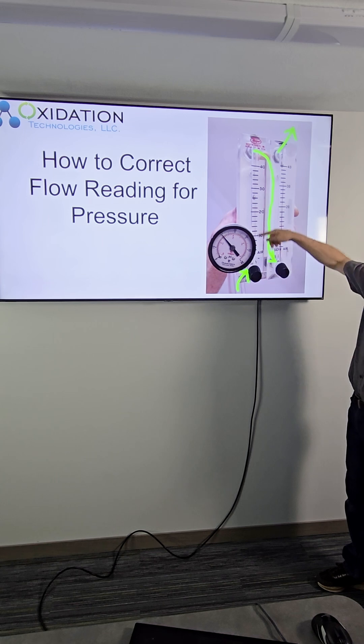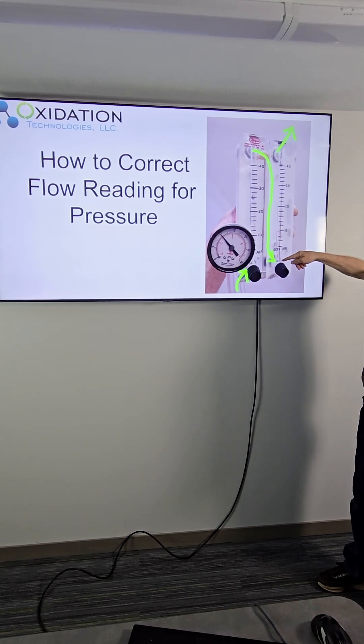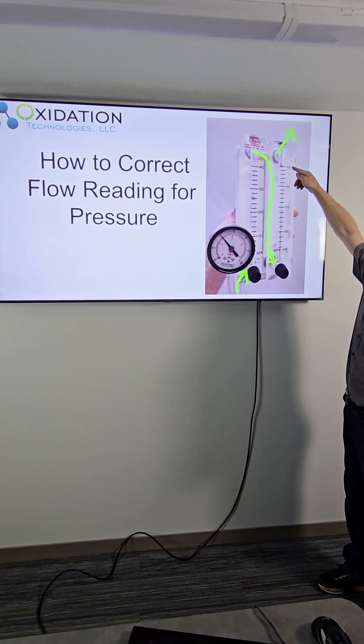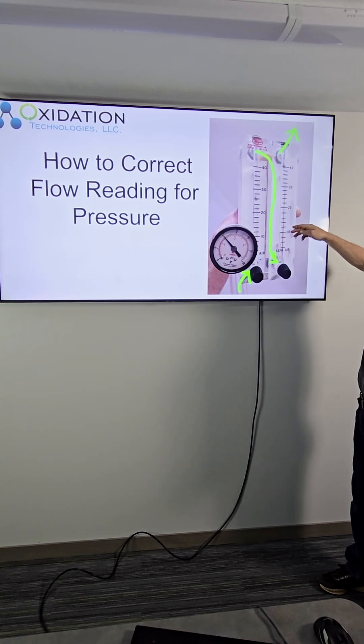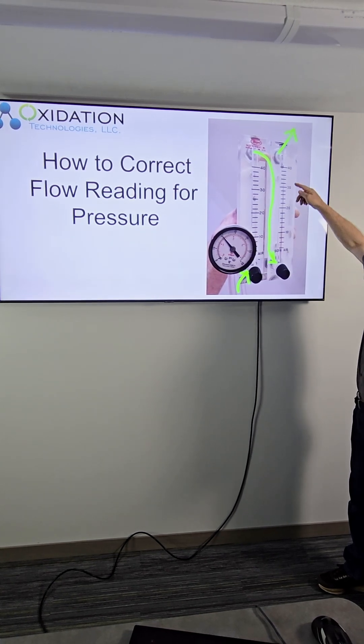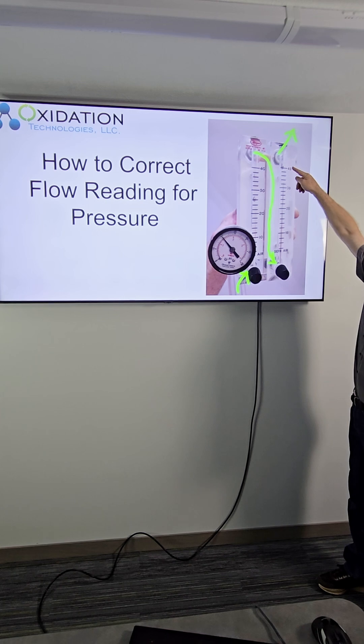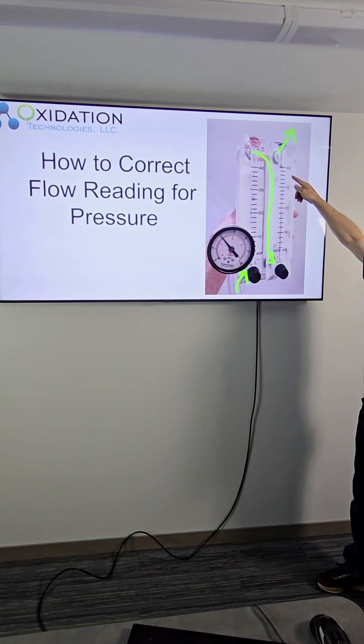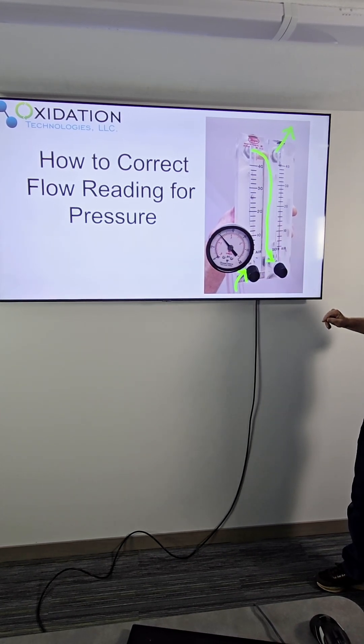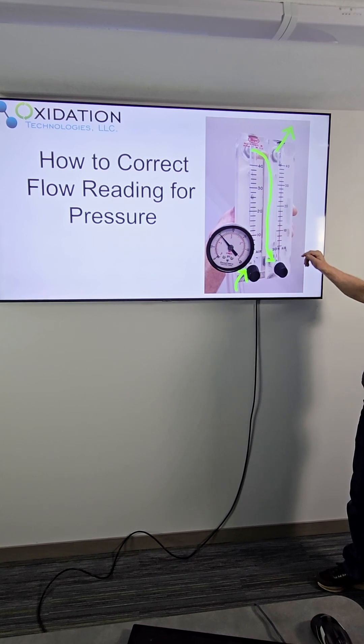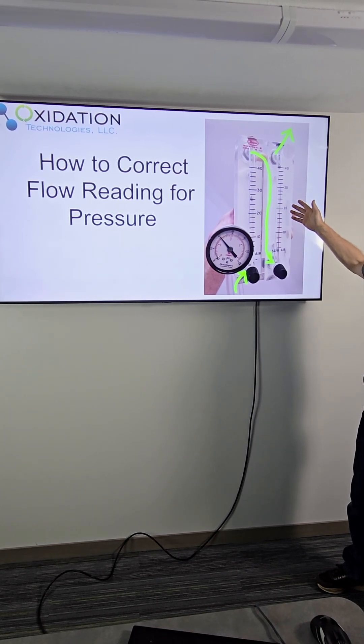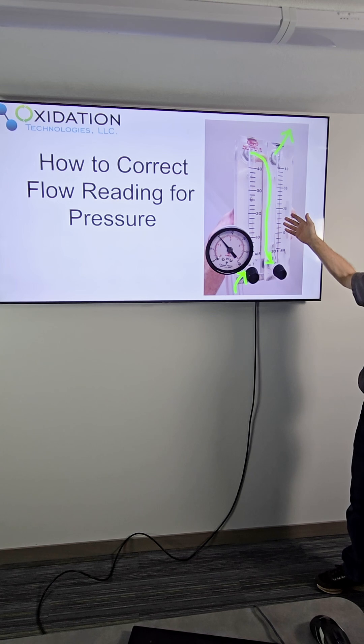So it's the same volume of gas that's flowing through both of them but you can see this flow meter that the little ball is being pushed all the way up to 40 SCFH of oxygen. And so the question is which one is correct or are they both correct?